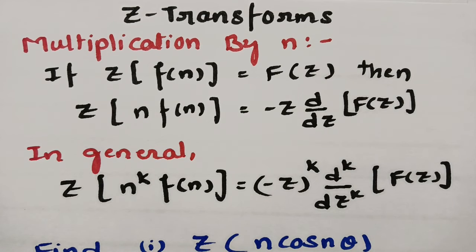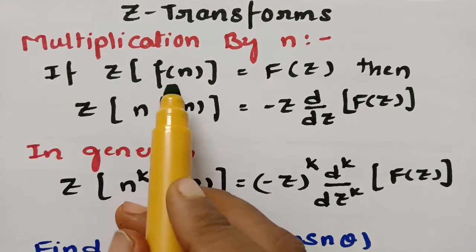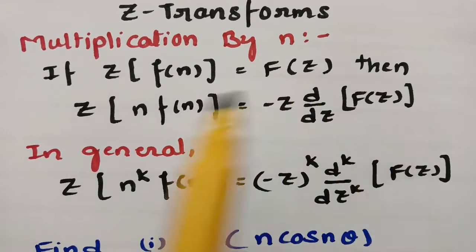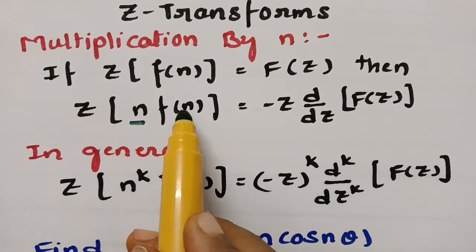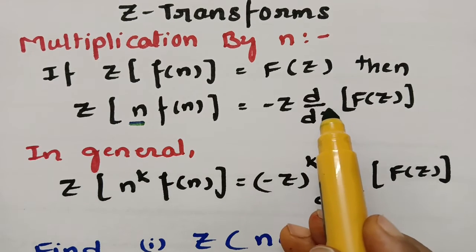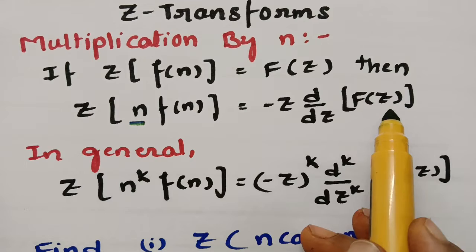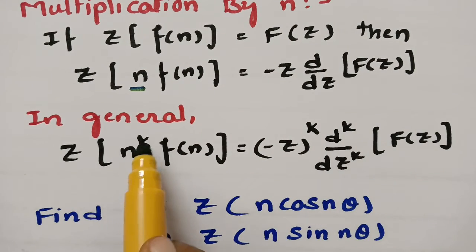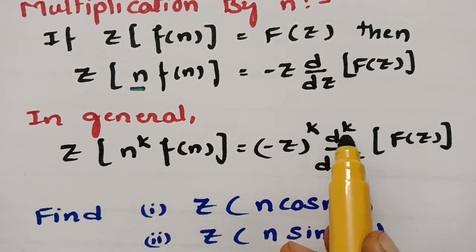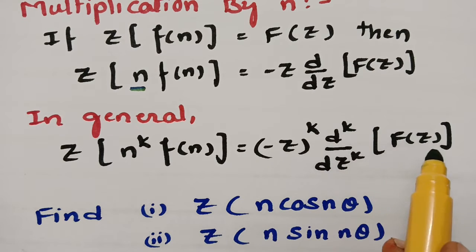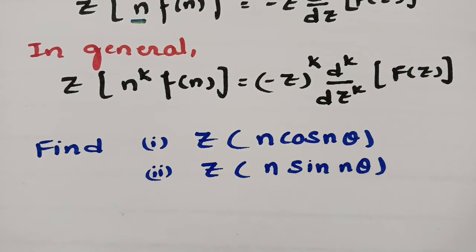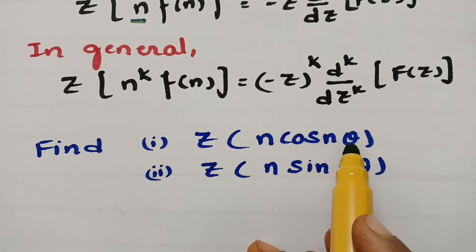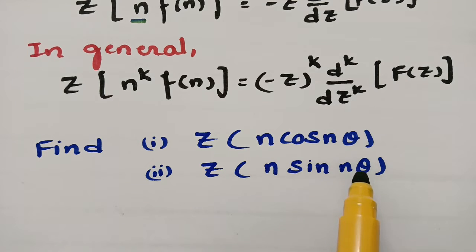This topic is from Z transforms. In this video, I am going to explain multiplication by n. If the Z transform of f(n) is equal to capital F(z), then the Z transform of n·f(n) is equal to minus z times d/dz of capital F(z). In general, the Z transform of n^k·f(n) equals minus z raised to k times the k-th derivative with respect to z of F(z). Using this multiplication property, I am going to solve the Z transform of n·cos(nθ) and Z transform of n·sin(nθ).